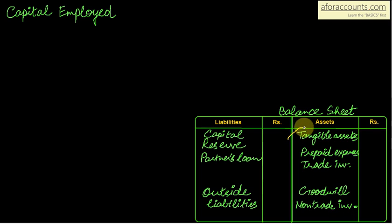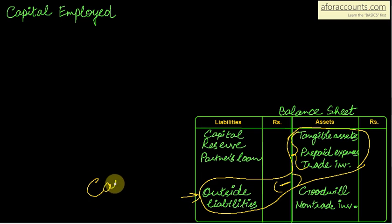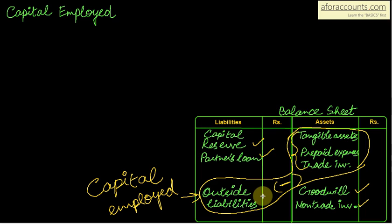So what you will do — take these tangible assets, prepaid expenses, and trade investments, and from their total subtract the outside liabilities. You have left out the reserve, the partner's loan, the goodwill, and the non-trade investments. So if a balance sheet is given, to calculate capital employed: sum up tangible assets, prepaid expenses, and trade investments, then minus the outside liabilities — and what you get is your capital employed.